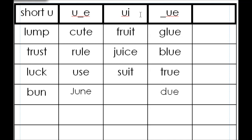First vowel does the talking, second vowel does the walking. So we have fruit, juice, suit, glue, blue, true, and due.